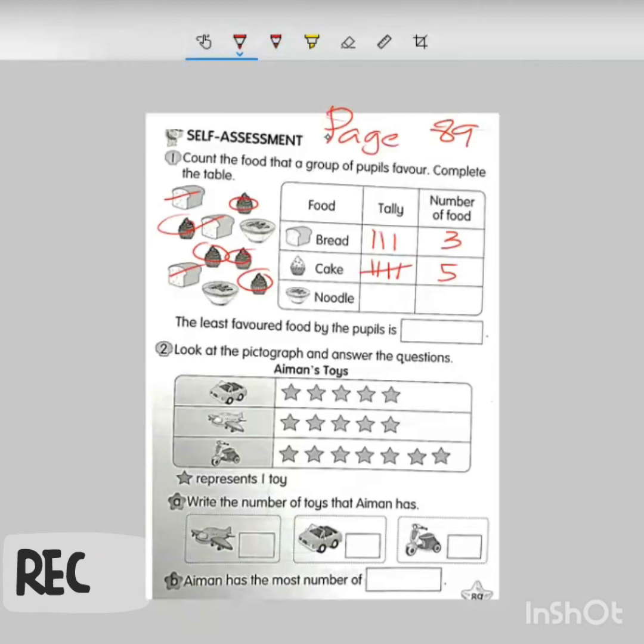How many noodles here? One, two. Only two noodles. So just do the tally here. And the number is two. The least favorite food by the people is - look at the word least. You need to find the smallest one, the smallest number. Which food got the smallest number? Yes, noodle. So write down your answer here.